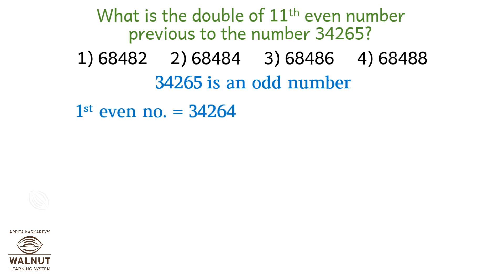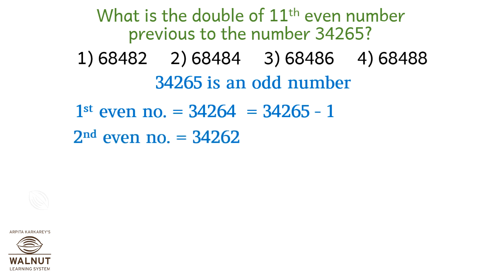The first even number before 34265 is 34264, which is 34265 minus 1. The second even number is 34262, which is 34265 minus 3.